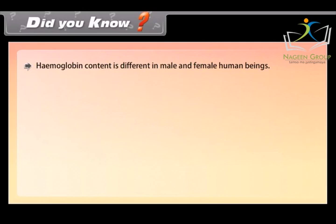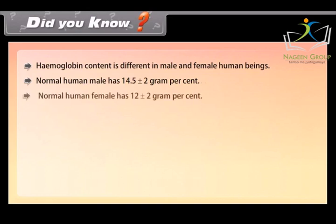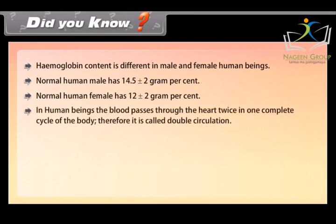Did you know? Hemoglobin content is different in male and female human beings. Normal human male has 14.5 ± 2 gram per cent. Normal human female has 12 ± 2 gram per cent. In human beings, the blood passes through the heart twice in one complete cycle of the body; therefore it is called double circulation.